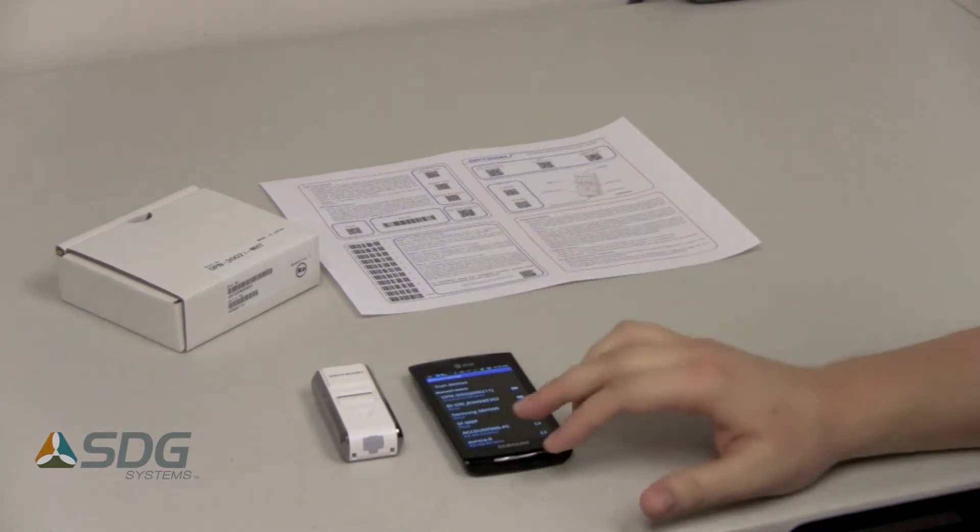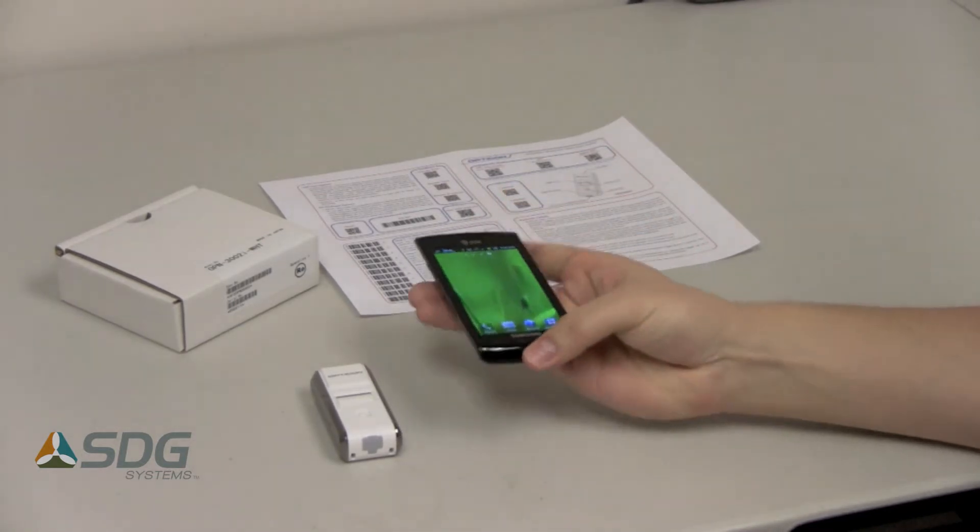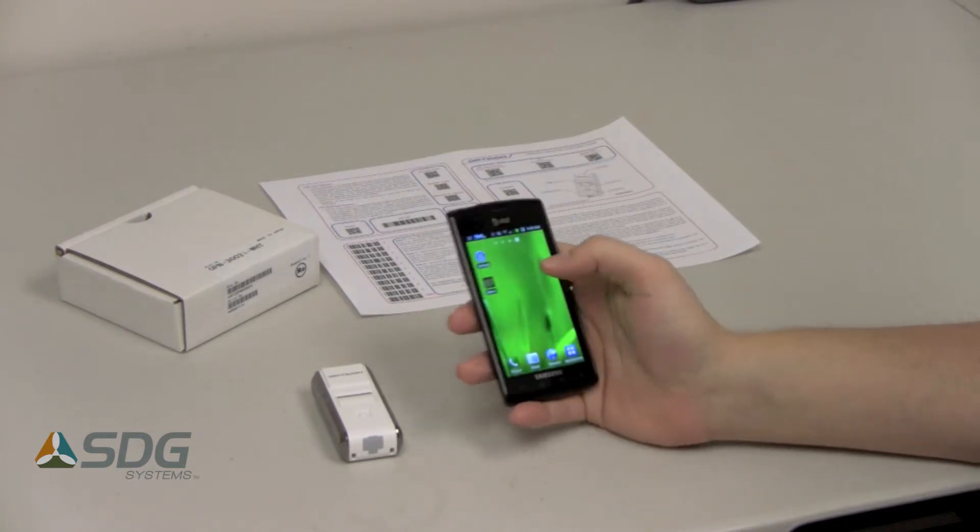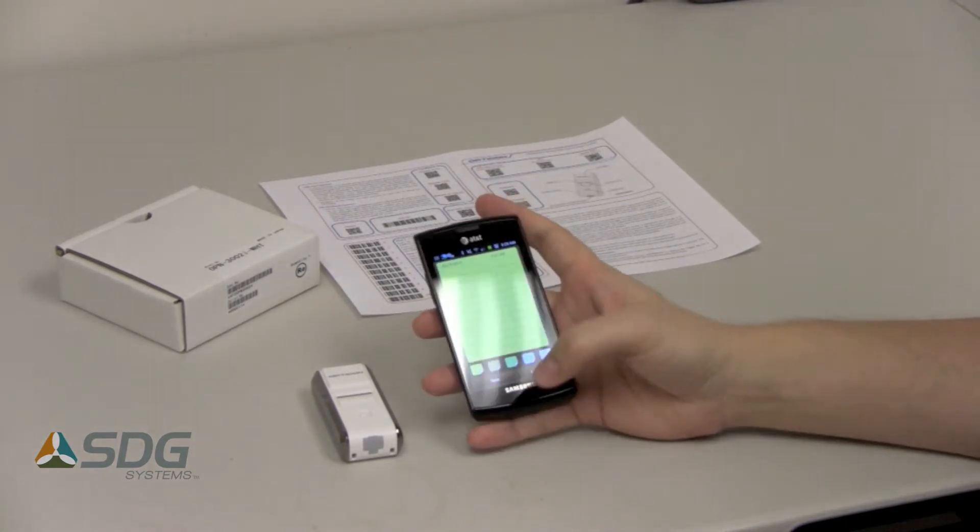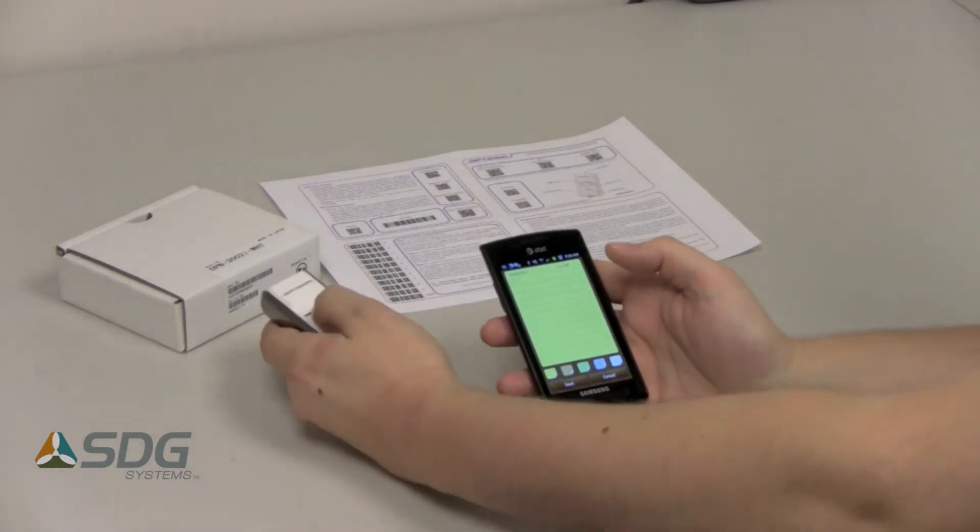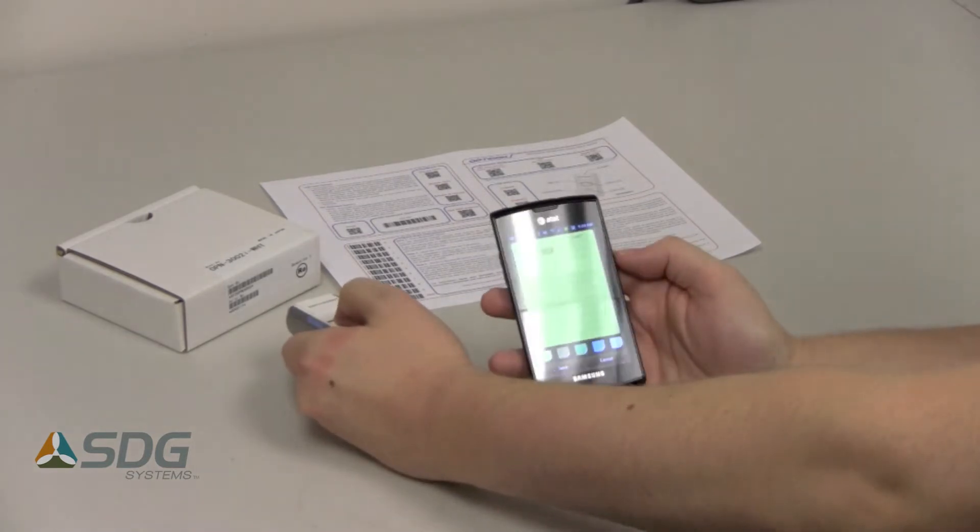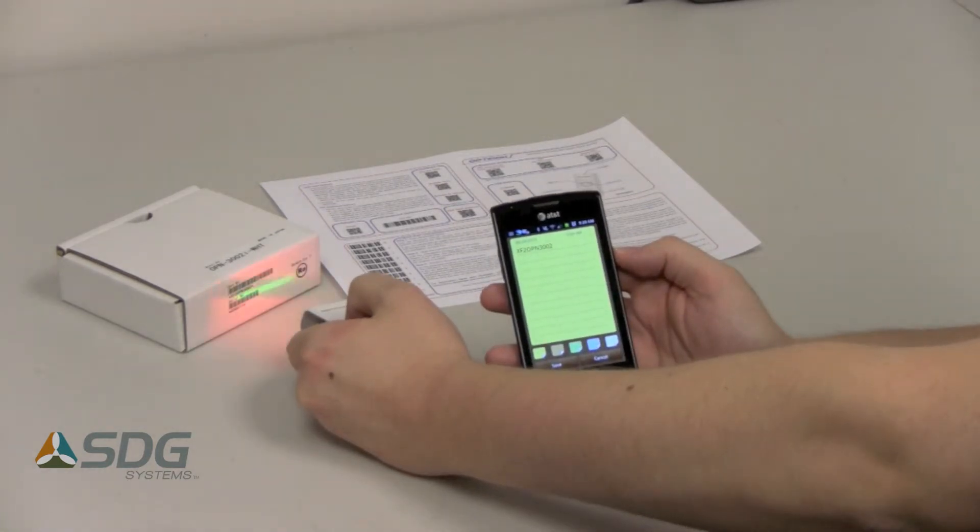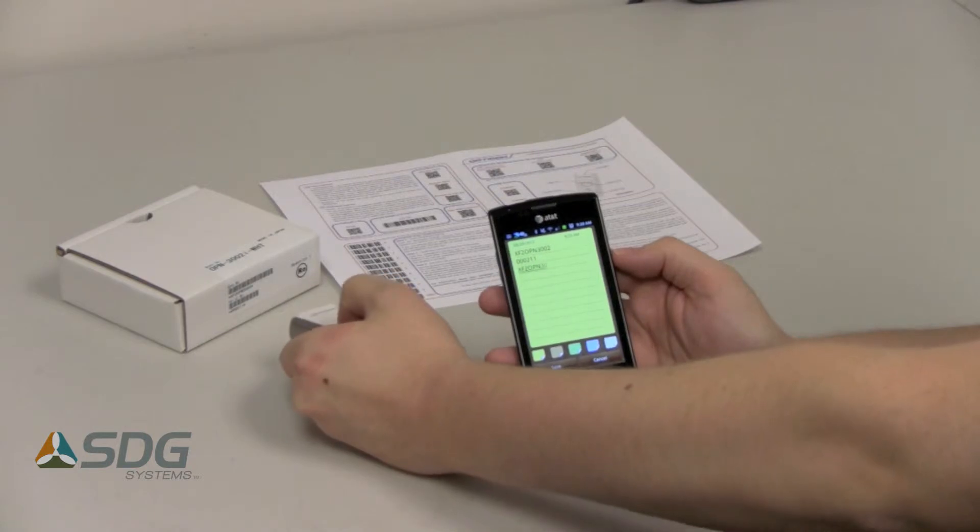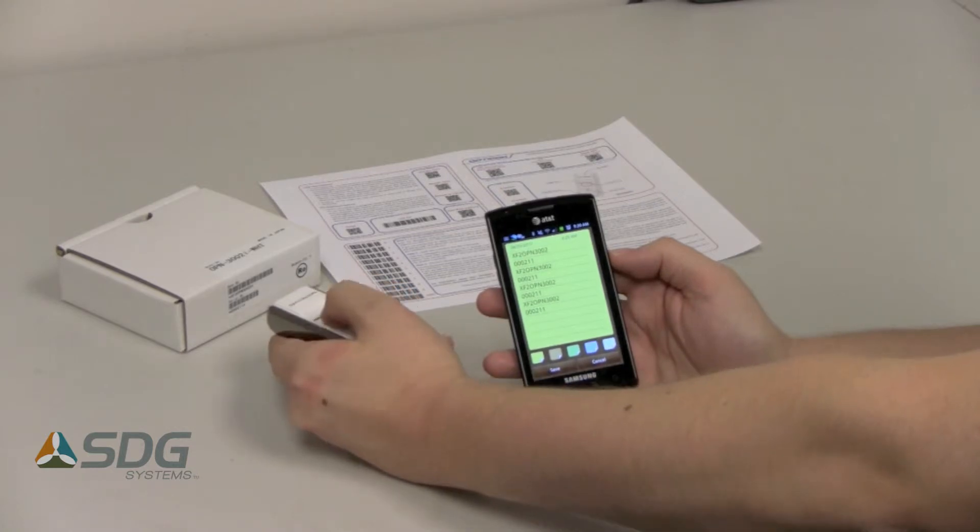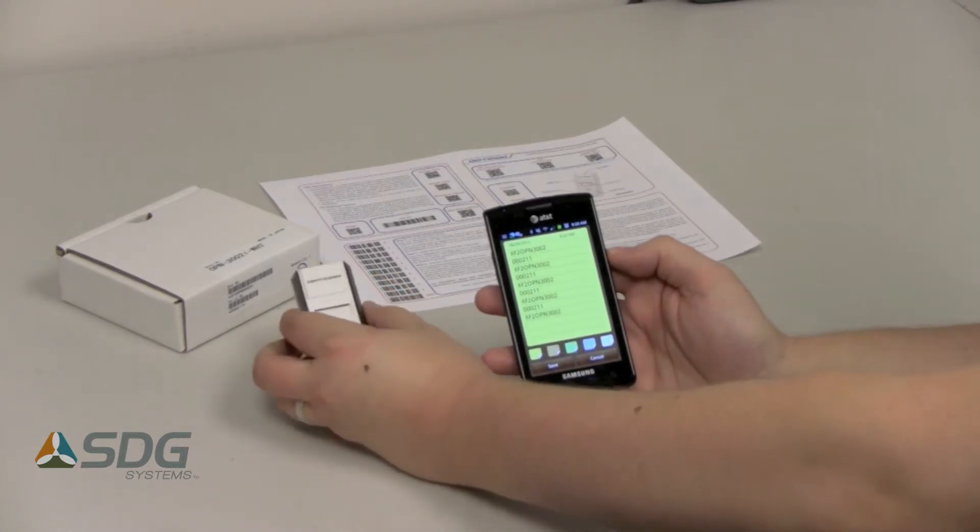So now that we're paired, we can go ahead and open up a new memo field and I can demonstrate some scanning. Now that you can see the text is appearing in the current text field, I can do this in just about any application I need to, which makes it very versatile.